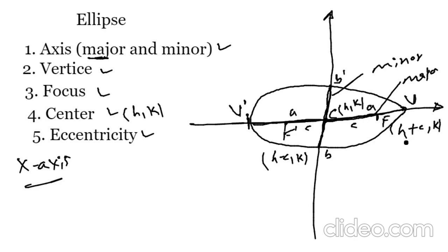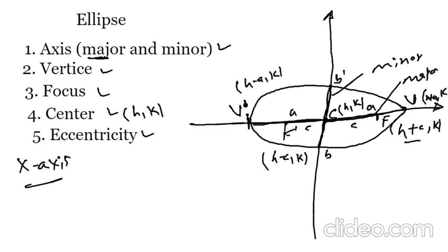The focus point is at (h plus c, k) and (h minus c, k). The vertex has distance equal to a very small value, and the second focus is at h plus c and h minus c, q. In the horizontal case, the value is h.